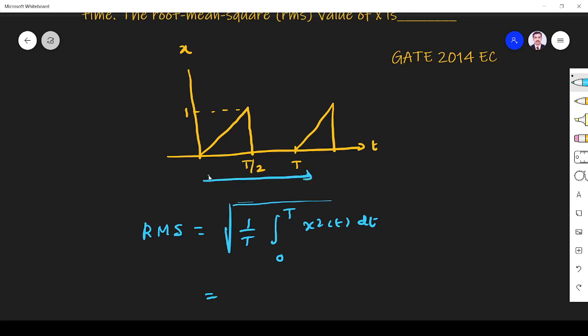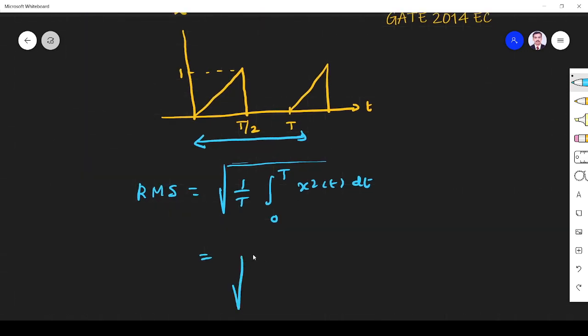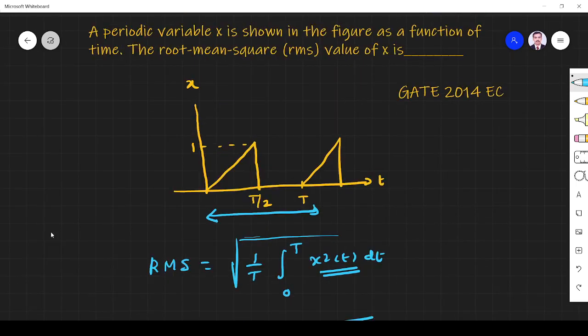From here to here it is t. So t by 2 to t. So that is not an issue. 1 by t. It is going from 0 to t. So we have to find what is x of t. So x of t.